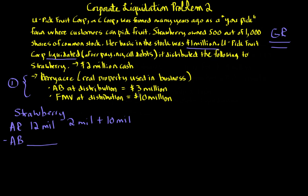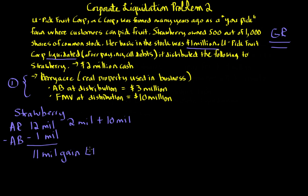We subtract the adjusted basis of the stock given up. There are no liabilities here, so we just have the stock basis of $1 million. Strawberry's realized gain is $11 million, which is both realized and recognized. Assuming Strawberry has held the stock for more than a year, this is going to be long-term capital gain to Strawberry.